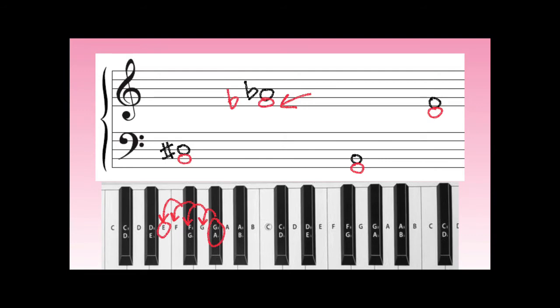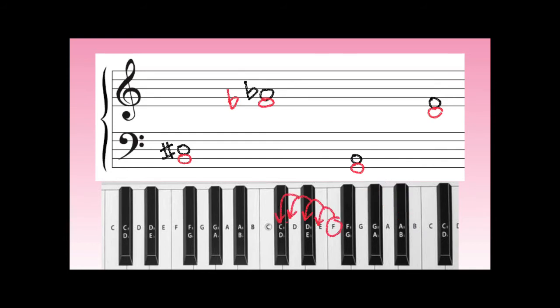Next, let's count down from a B: one, two, three, four half-steps down is a G natural — this is already correct and we don't need to add any accidentals. And finally, counting down from an F: one, two, three, four half-steps down. Is this a C-sharp or a D-flat? Well, we're on the D space — that means it needs the letter name D. This is a D-flat.